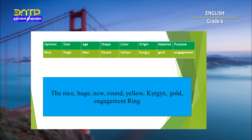The opinion is nice. The size is huge. The age is new. The shape is round. The color of our ring is yellow. It was made in Kyrgyzstan, that is why it's Kyrgyz. The material is gold.